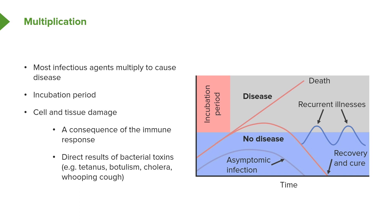Some bacterial infections where bacteria are replicating will not result in disease. These are called asymptomatic infections, and many people have these — a consequence of being able to control bacterial replication, or simply having more resistance to disease formation. The outcome of a bacterial infection can be recovery, cure, and subsequent immunity. It can unfortunately, in many cases, be death. Or in some cases, immunity is not lifelong and we suffer recurrent illnesses with the same pathogens.